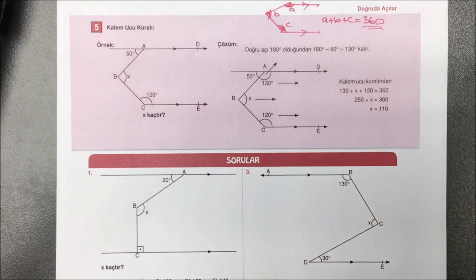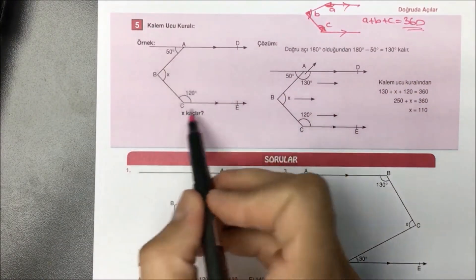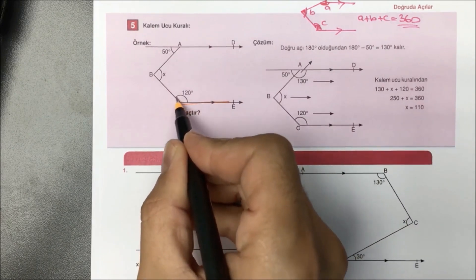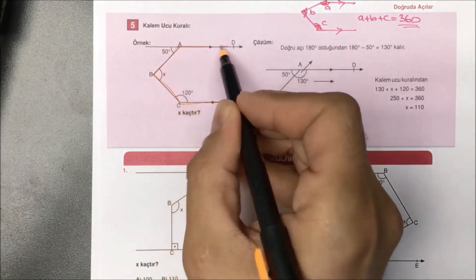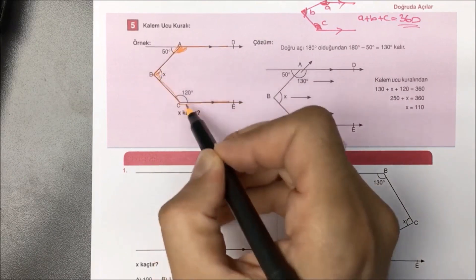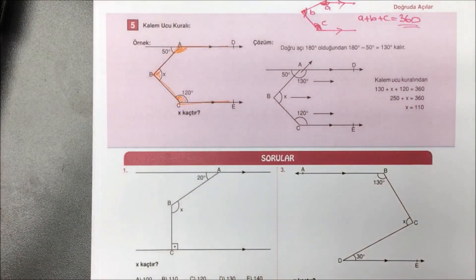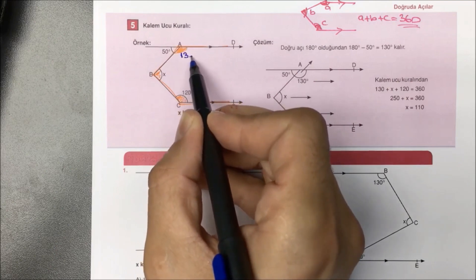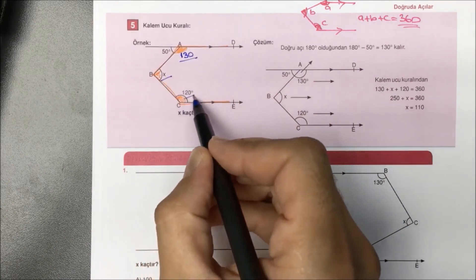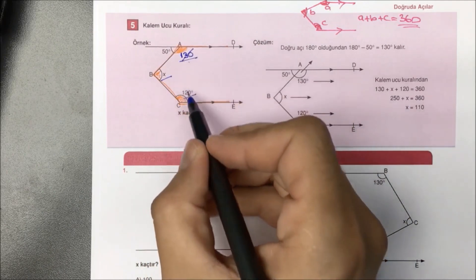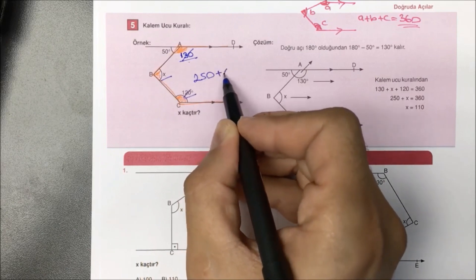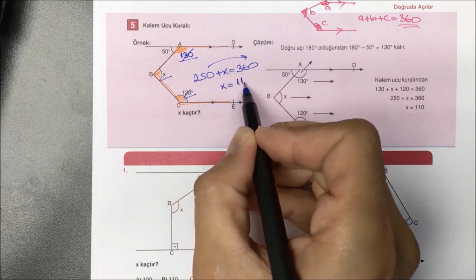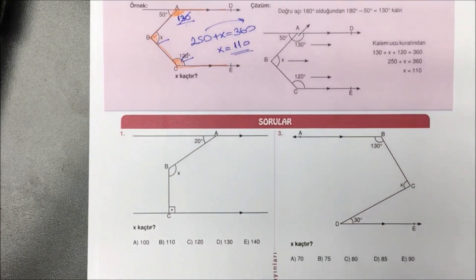Açıklama örneğinde verilenlere göre X kaçtır diye sorulmuş. Öncelikle burada kalem ucunu görmenizi istiyorum: birinci açım, ikinci açım X ve üçüncü açım var; bu üçünün toplamının 360 derece olduğunu söyleyebilirim. Bu soruyu çözebilmek için öncelikli olarak 50'nin sağ tarafını bulmam lazım. Doğru açı kuralı gereği 50'nin sağ tarafına 130 derece kaldı. 130 ile 120'yi toplarsak 250 geldi; artı X eşittir 360. 360'dan 250'yi çıkartacak olursak aradığımız yanıt 110 derece olarak bulunmuş olur.